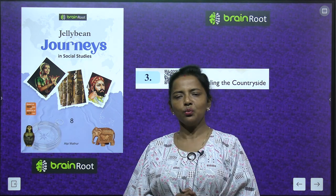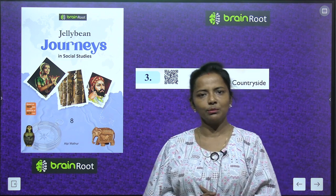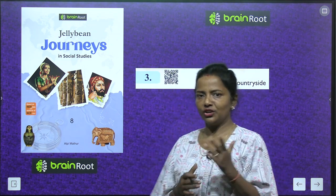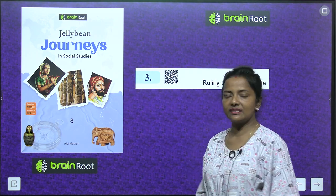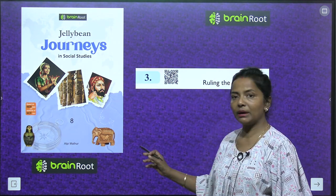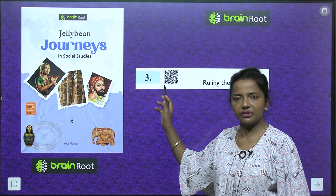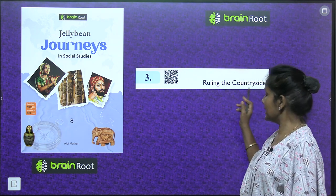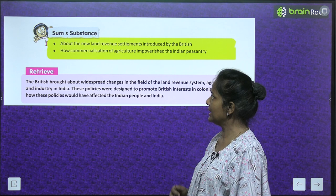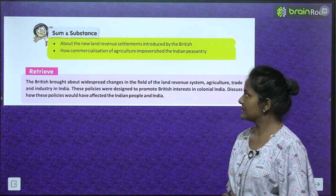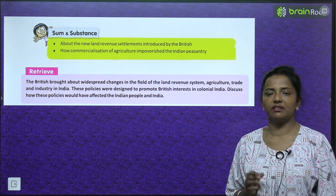Hello, shining stars! A very warm welcome to your social studies class. This is your learning buddy Aparajita with your own book Jellybean Journeys in Social Studies, Class 8, by the Brainroot series. Today, let's start with Chapter 3: Ruling the Countryside — sum and substance about the new land revenue settlements introduced by the British.